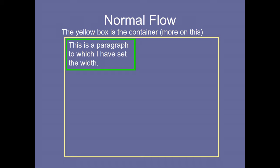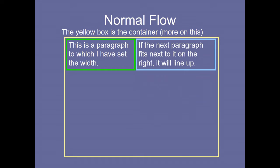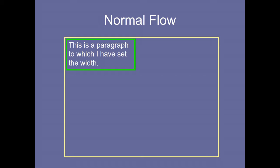In the normal flow, the yellow box is the container. Inside this container we are putting a paragraph with a set width. When the next paragraph fits next to it on the right, it will line up. The next paragraph comes inside the blue circle — it adjusts only after finishing the green circle paragraph. So one container, one paragraph, another paragraph — both adjust using normal flow.